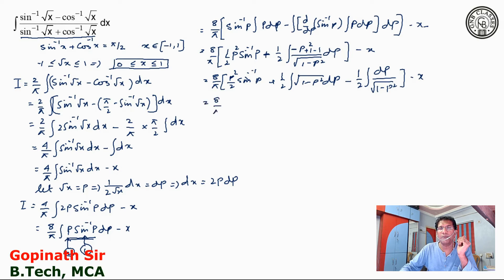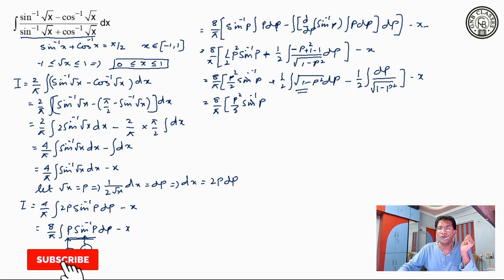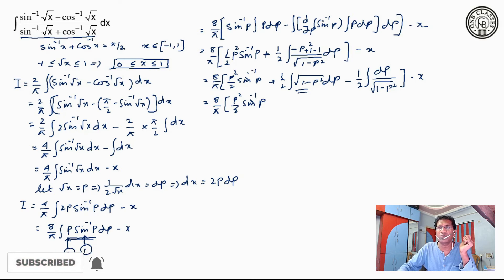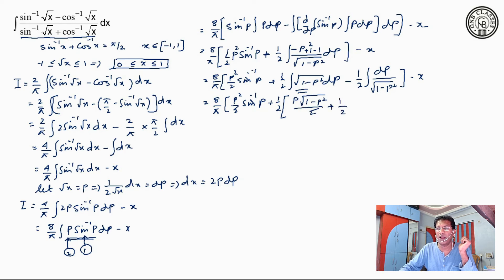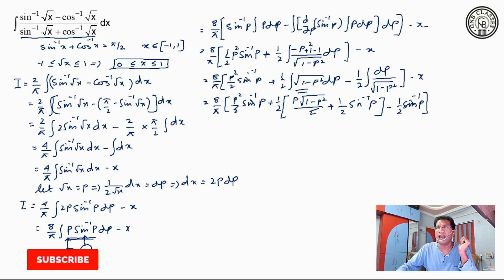So it is 8 by pi: p squared by 2 sin inverse p. Now we apply the formula for integral of under root a squared minus x squared, which is x times under root a squared minus x squared by 2 plus a squared by 2 sin inverse x by a. Applying this formula with p in place of x and a equal to 1: p under root 1 minus p squared by 2 plus 1 by 2 sin inverse p. Close the bracket. Minus half sin inverse p. Close the bracket and minus x.